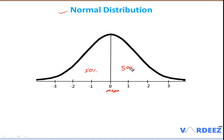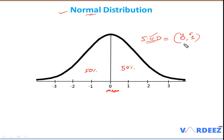When we talk about a standard normal distribution, we have a mean of zero and a standard deviation of one. This is the special property of the standard normal distribution. This is one reason why we convert a normal distribution — because we get a standardized mean and standard deviation, which helps us find any specific area using the z-table.